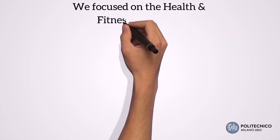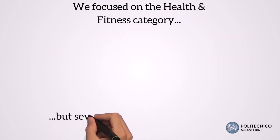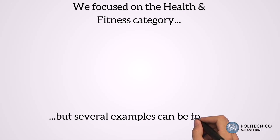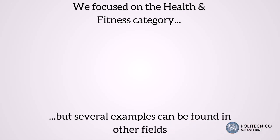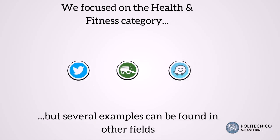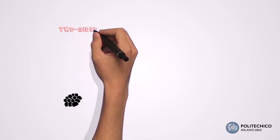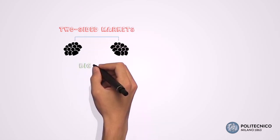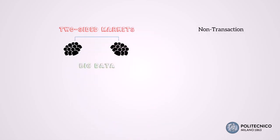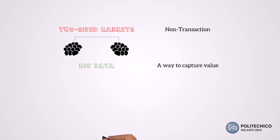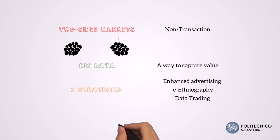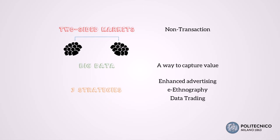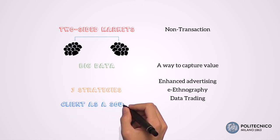We focused on the health and fitness category, but the results of this research may be expanded to several other categories and industries, such as social networks, physical products, and other digital services. This research offers a first link between the two-sided market structure and the phenomenon of big data, relying on the non-transaction model to highlight a way to capture the value embedded in big data, defining three different strategies and expanding the traditional view on two-sided markets from a client-as-a-target to a client-as-a-source perspective.